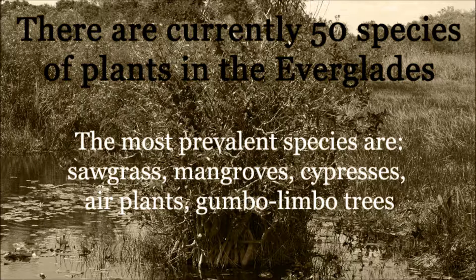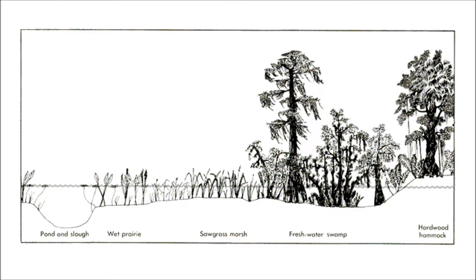Besides the animals, there are 50 species of plants present in the Everglades, the most common plants being sawgrass, mangroves, cypresses, air plants, and gumbo-limbo trees. The plants have their own mini-ecosystems within the park, and as discussed in part 1 of the Everglades mini-series, there are 5 types of plant ecosystems: hardwood hammock, freshwater swamp, sawgrass marsh, wet prairie, and pond.